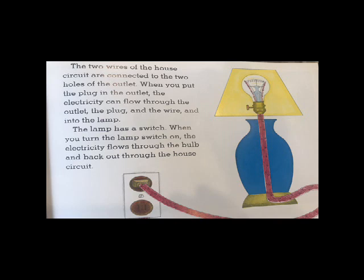When you put the plug in the outlet, the electricity can flow through the outlet, the plug and the wire and into the lamp. The lamp has a switch. When you turn the lamp switch on, the electricity flows through the bulb and back out through the house circuit.